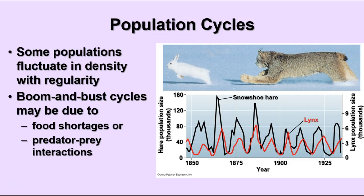Populations can also fluctuate with regularity — these are called boom and bust cycles, often occurring due to predator-prey interactions or cyclical food shortages. A long-term study in Canada examined lynxes and snowshoe hares. When lynx numbers are high, the snowshoe hare population drops. That's followed by a drop in the lynx population because there's not enough food, so birth rates fall and the whole population declines. This allows the hare population to rebound, which then provides enough food for the lynx population to rebound too — an example of how populations respond to each other over time.